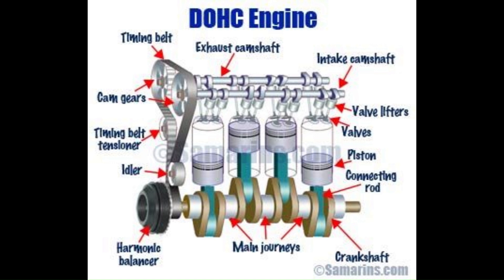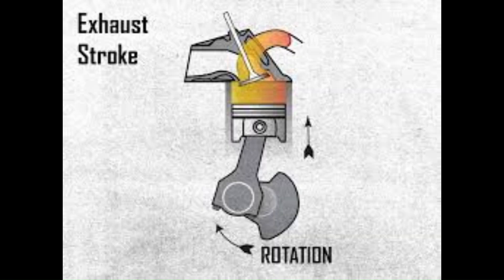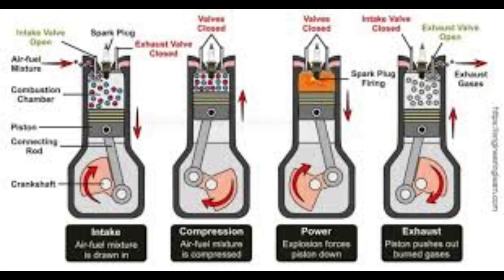Friction from Bearings and Moving Parts: Throughout the engine, there are various moving parts such as the crankshaft, camshaft, and pistons, which are supported by bearings. The friction in these bearings contributes to mechanical friction losses, which can waste a significant portion of the engine's energy. Reducing friction in these components is key to improving efficiency, which is why manufacturers use low-friction coatings and advanced lubricants to minimize this type of loss.